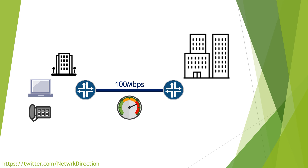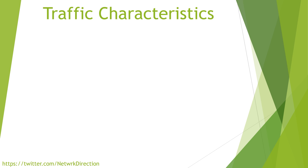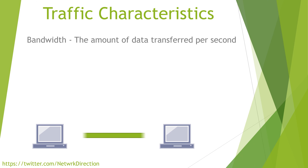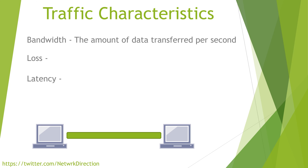As we dig deeper into QoS, you will find that it's important to understand the characteristics of different traffic types. The way these are managed on the network will affect each application. Of course, we all know about bandwidth — some traffic types like video and file transfers use a lot of bandwidth, while other traffic types use very little. But aside from bandwidth, there are three other characteristics to consider: loss, latency, and jitter.